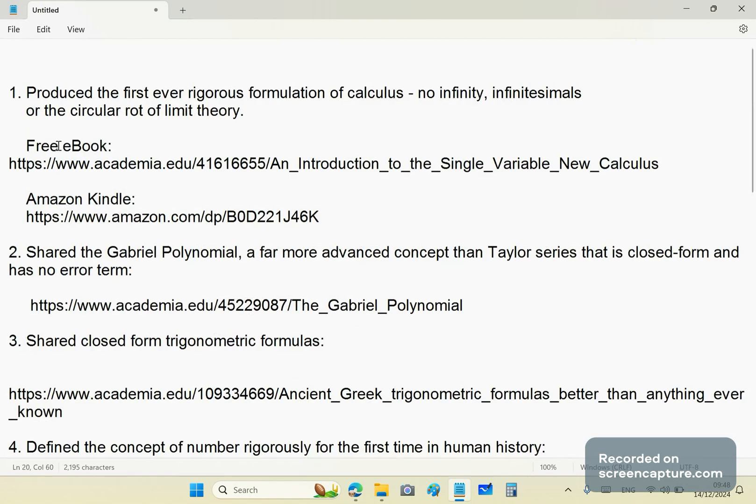So the first important accomplishment, which is worthy of at least one Abel prize, if not more: I produced the first rigorous formulation of calculus in human history. That means a calculus that contains no orphaned concepts or bullshit like infinity, infinitesimals, or the circular rot of limit theory. And I give you a link to a free e-book there and also to a book you can purchase, which has a lot more information in it. That's right, I don't share that extra information. If you want to know it, you have to buy my book. Simple as that.